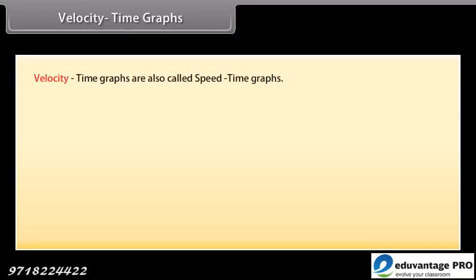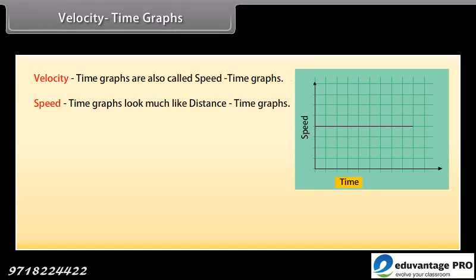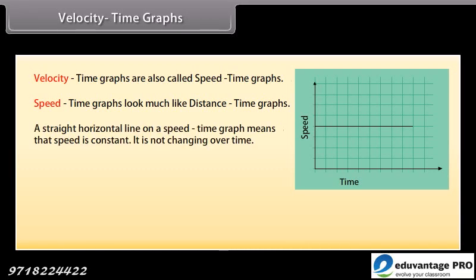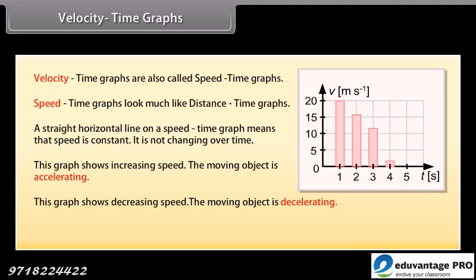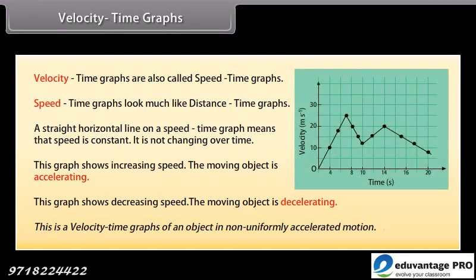Velocity-time graphs, also called speed-time graphs, look much like distance-time graphs. Time is plotted on the x-axis and speed or velocity on the y-axis. A straight horizontal line means speed is constant and not changing over time. An upward sloping graph shows increasing speed — the object is accelerating. A downward sloping graph shows decreasing speed — the object is decelerating. A curve on a velocity-time graph represents non-uniformly accelerated motion.